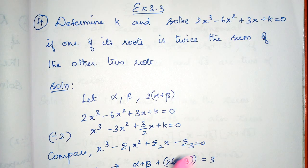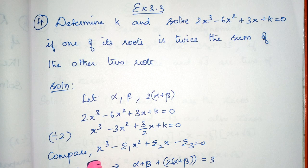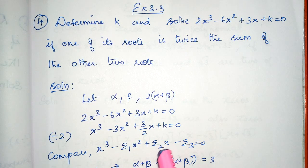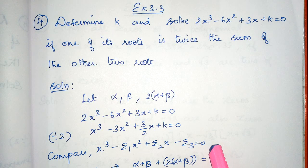Now we will proceed with the same method. Write the equation, divide by 2. Now we have to compare with the beta's equation, which is x cube minus sigma 1 x square plus sigma 2 x minus sigma 3, which is equal to 0.